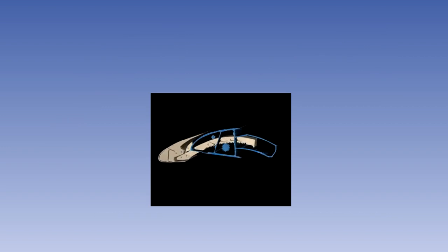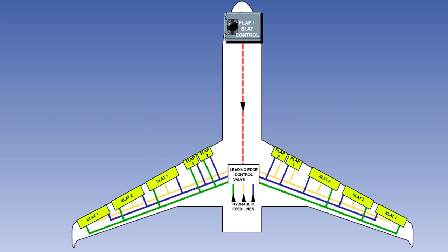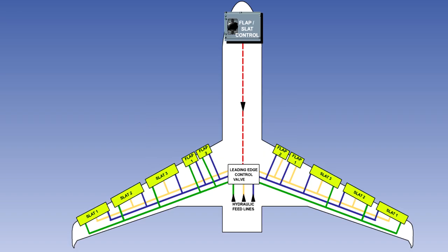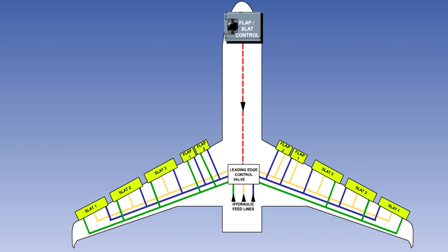Slats are sections of the wing leading edge that extend forward to an intermediate position to form a sealed leading edge, or they can extend fully, forming a slotted leading edge, depending on the trailing edge flap setting.